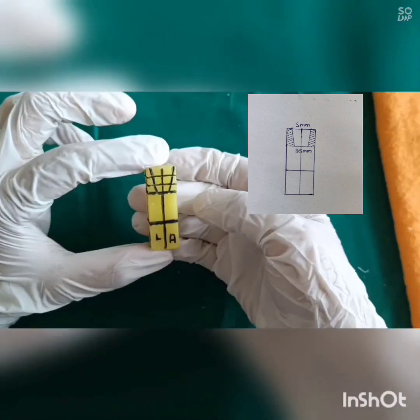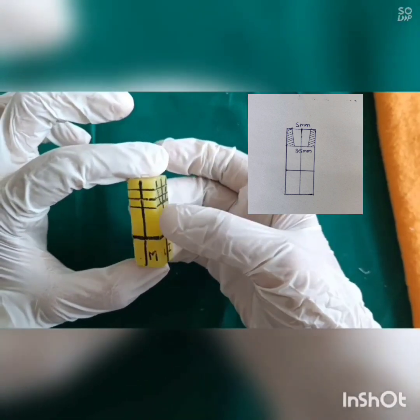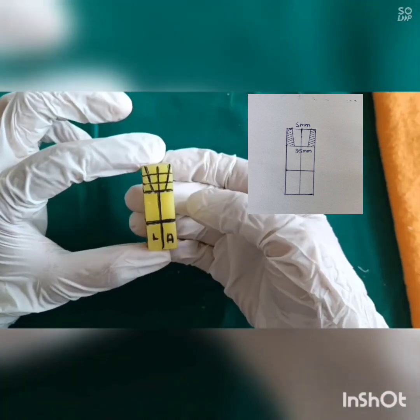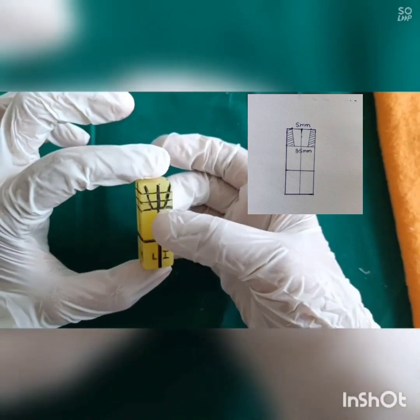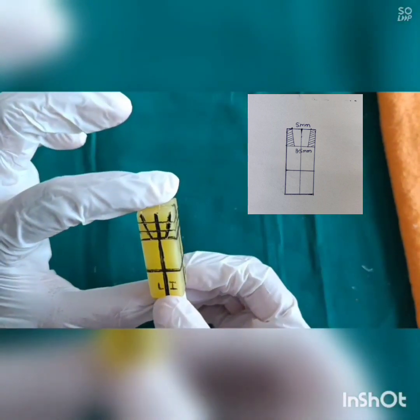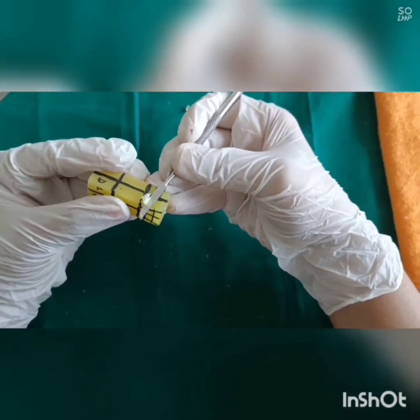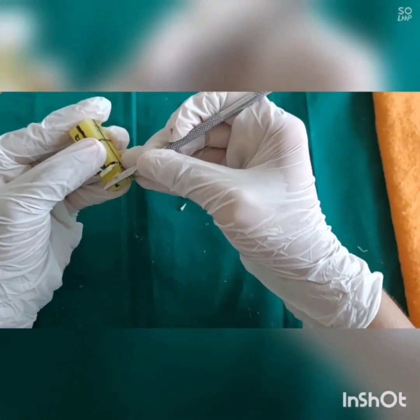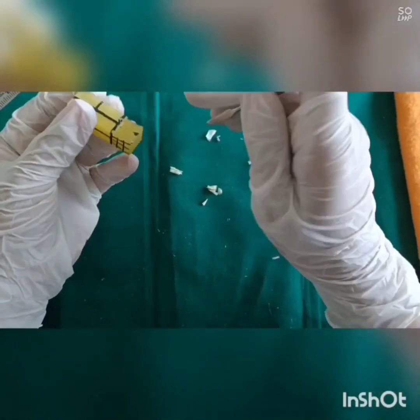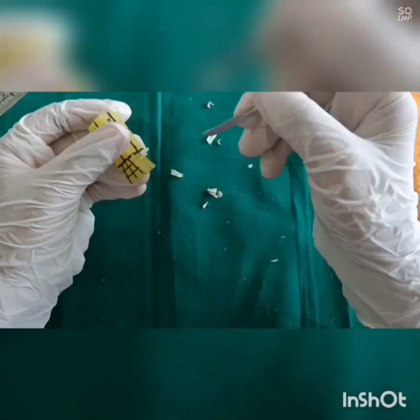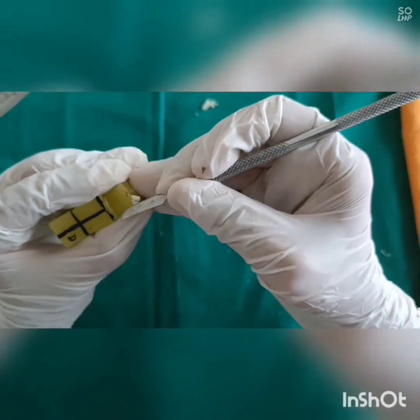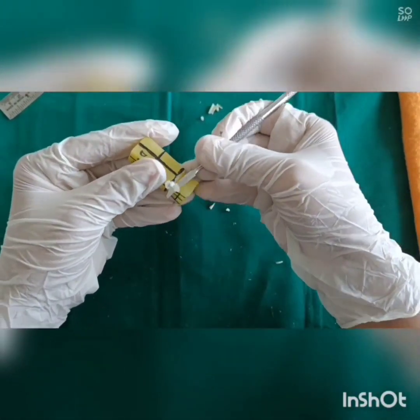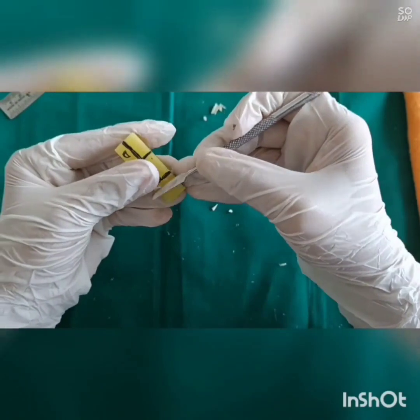Divide the crown into three equal parts: incisal, middle, cervical. Start removing wax from mesial and distal sides.